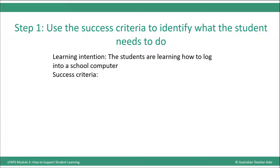As you will recall from module 1, success criteria describe what students need to do to successfully achieve the learning intention. So step 1 is to use the success criteria to identify what students need to do. You won't always have a list of success criteria to refer to in every support lesson and may sometimes need to work them out beforehand, or better still, with the student. Let's look at an example.